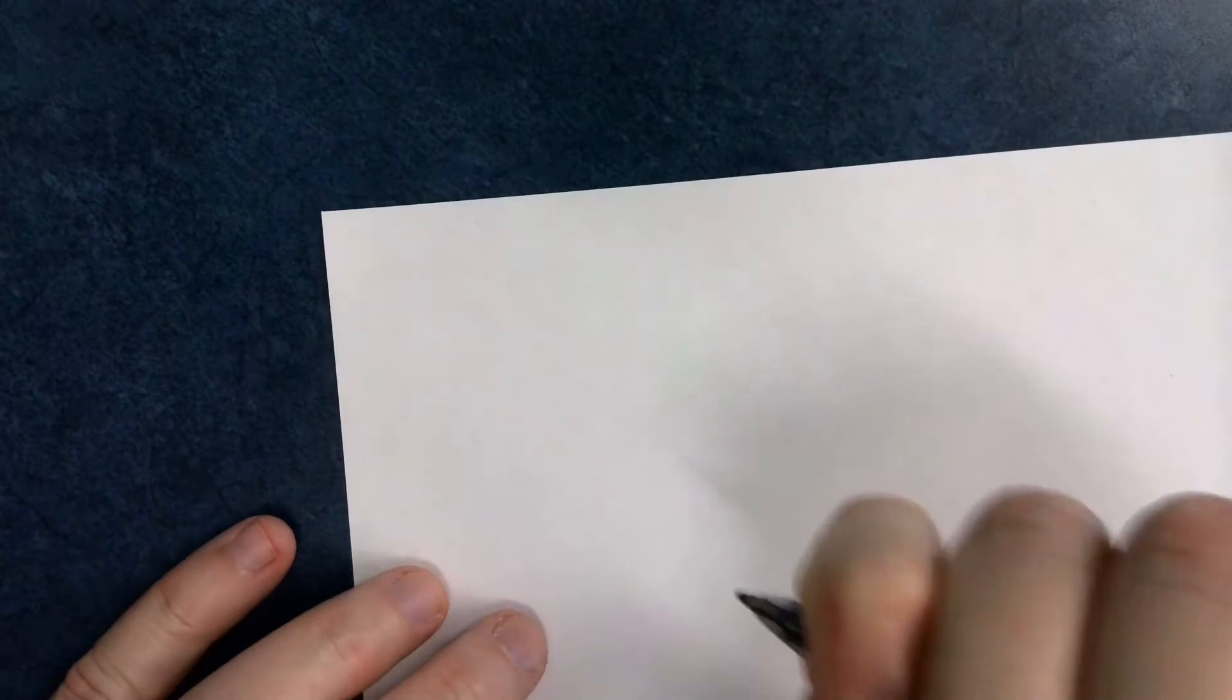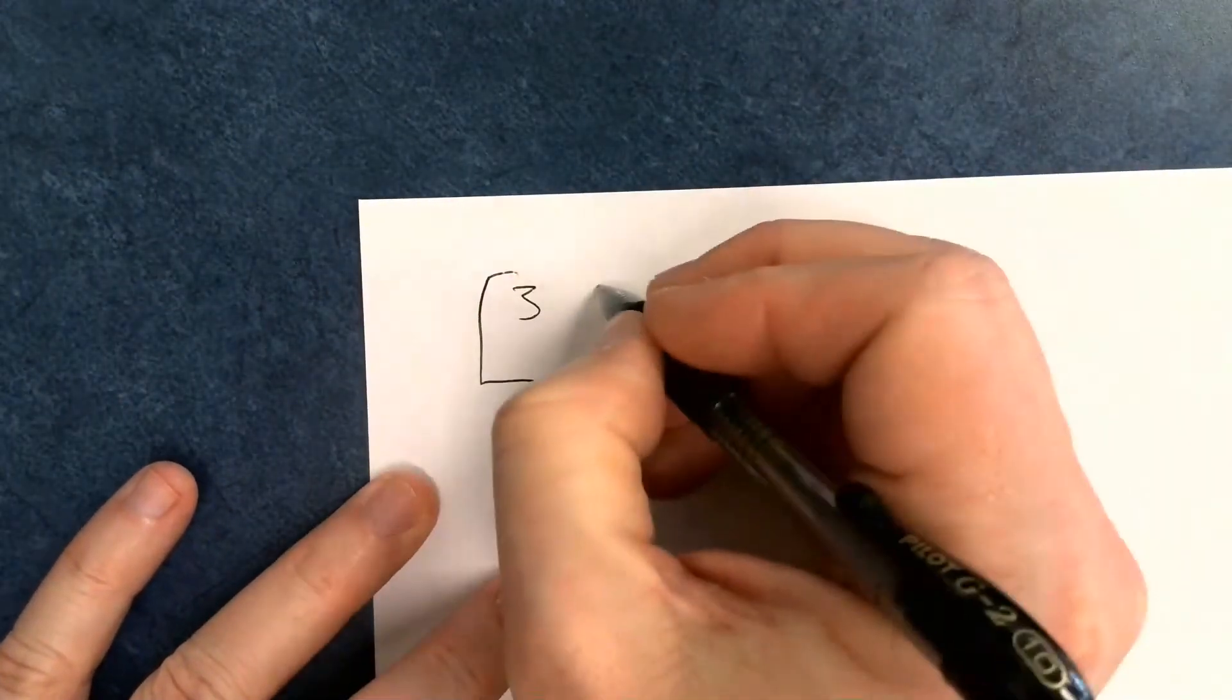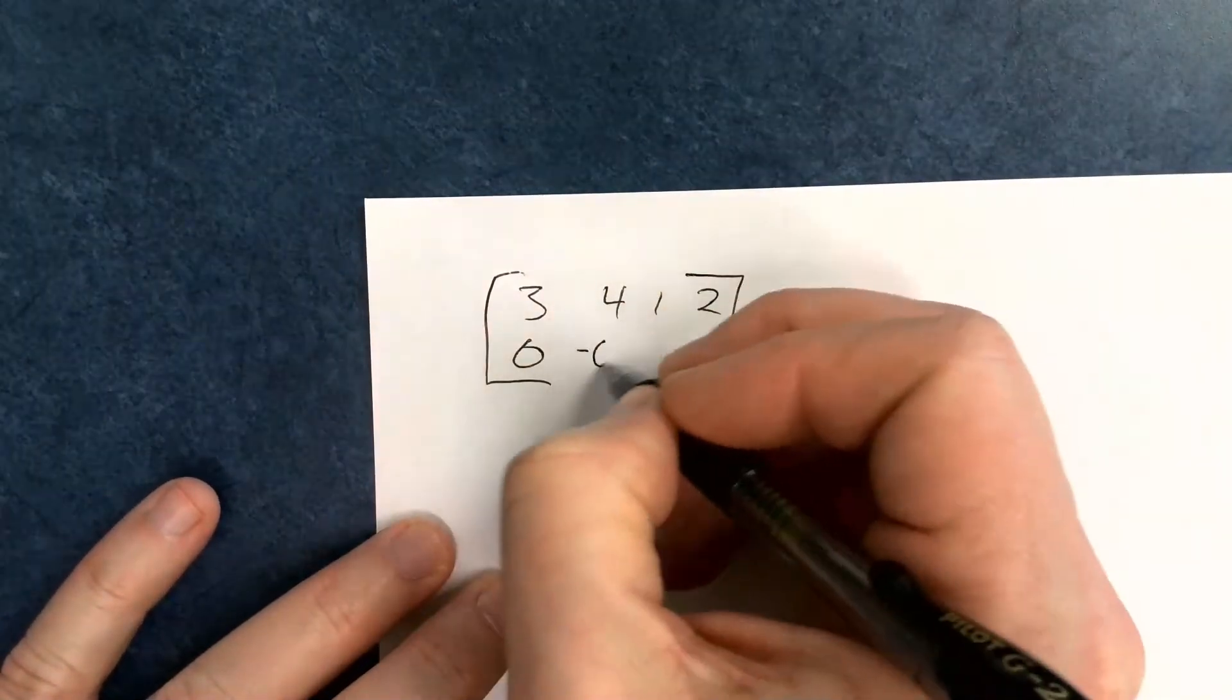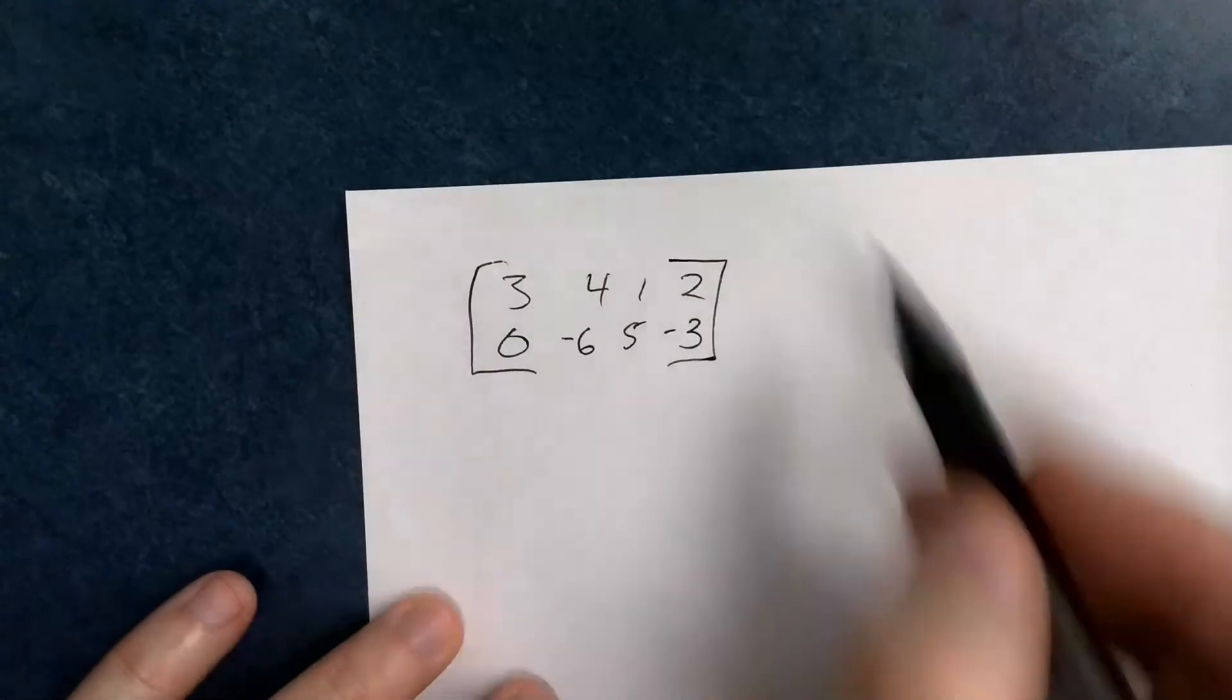Okay, so first off, a matrix is simply a series of rows and columns of numbers. So let's say I had this: 3, 4, 1, 2, 0, negative 6, 5, negative 3. So this is considered a matrix.